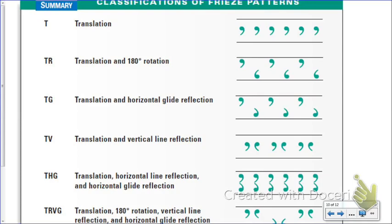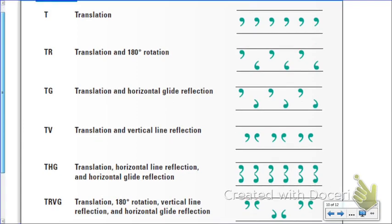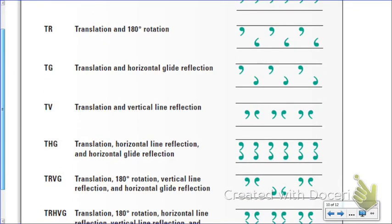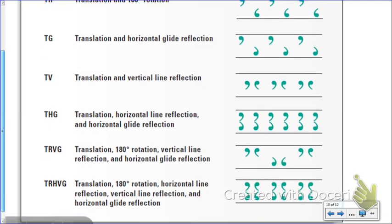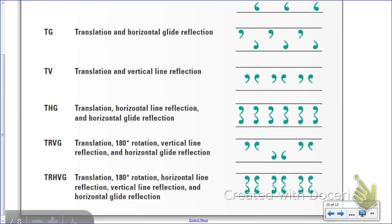Here's a summary table of all the different types of freeze patterns, showing abbreviations: T for translation, TR for translation followed by rotation, TG for translation followed by horizontal glide reflection, and so on. You can pause the video to copy this table into your notes. Remember, freeze patterns extend to the right and left where an object keeps being mapped onto itself and repeating over and over again.